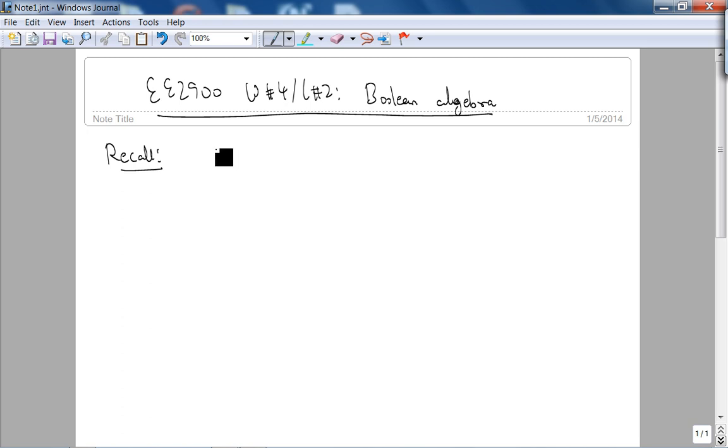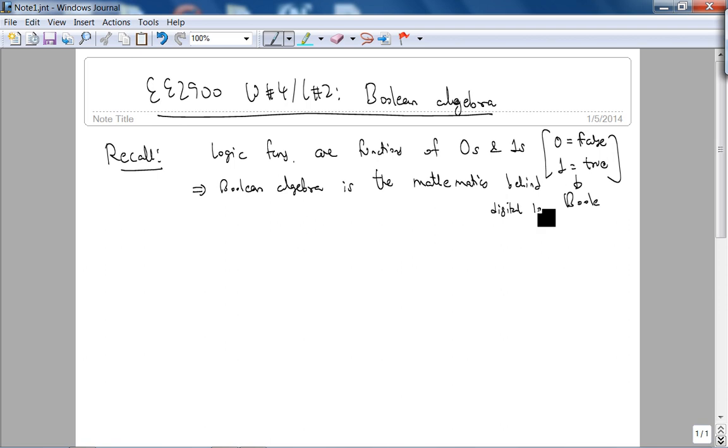So, logic functions are functions of 0's and 1's and basically 0 could be defined as false and 1 as true, and remember George Boole was a logician, but we are not going to use this false and true in the sense it's just 0's and 1's, which implies Boolean Algebra is the mathematics behind digital logic, and that's why we need to know this, in a simple sense, if you want a simple justification.